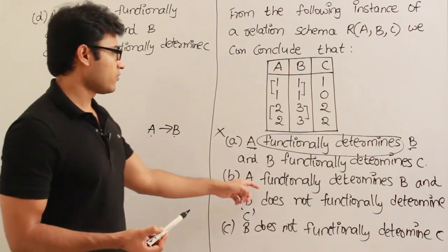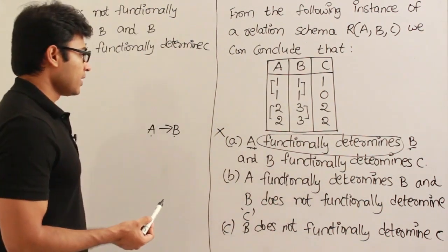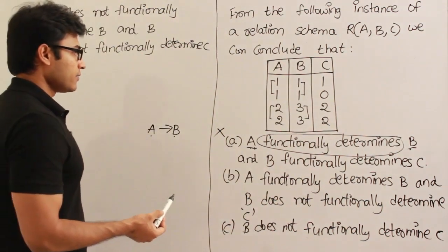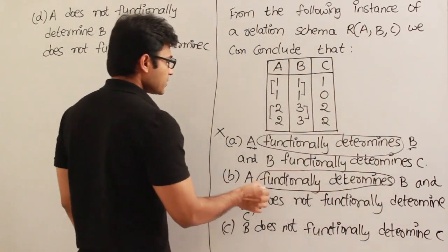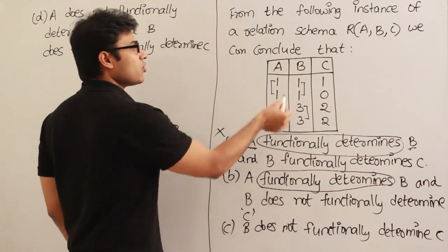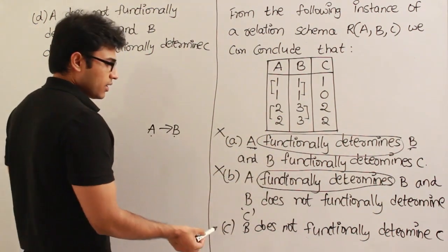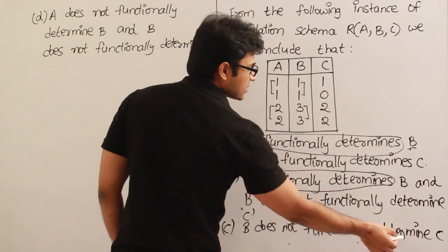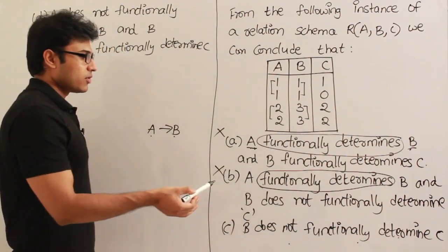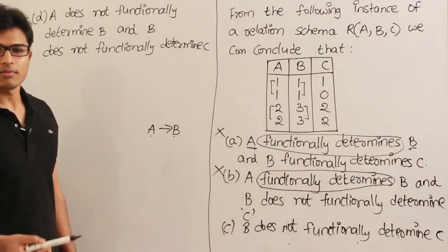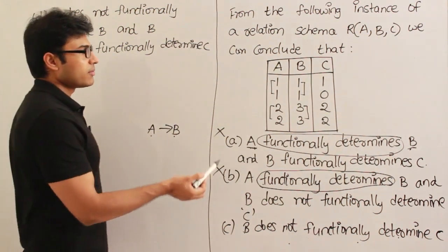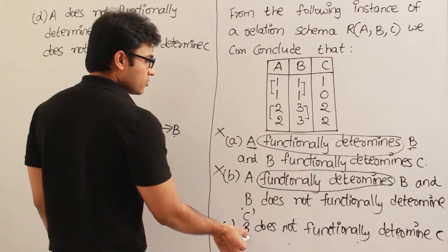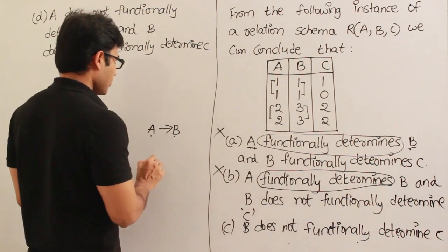The next one, A functionally determines B - again this is also a blunder. I can never conclude this. It might hold true on this instance but not on the database. Now, B does not functionally determine C - yes, we can be sure about what doesn't hold but we cannot be sure about what really holds. Therefore, let me check B determines C whether it holds or not.